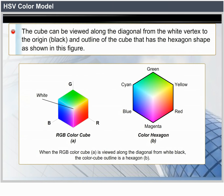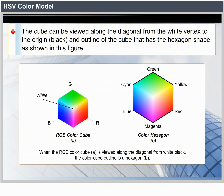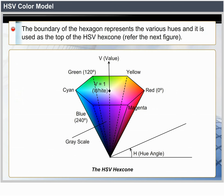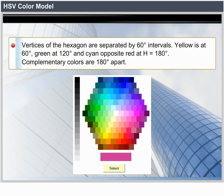If we imagine viewing the RGB cube along the diagonal from the white vertex to the black origin, we see an outline that has a hexagon shape. The boundary of the hexagon represents the various hues and is used as the top of the HSV hex cone. Hue is represented as an angle about the vertical axis ranging from 0 degrees at red to 360 degrees. Vertices of the hexagon are separated by 60-degree intervals. Yellow is at 60 degrees, green at 120 degrees, and cyan — opposite red — at H equals 180 degrees.